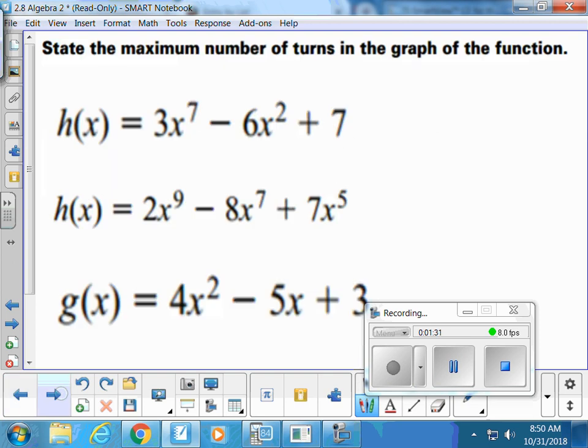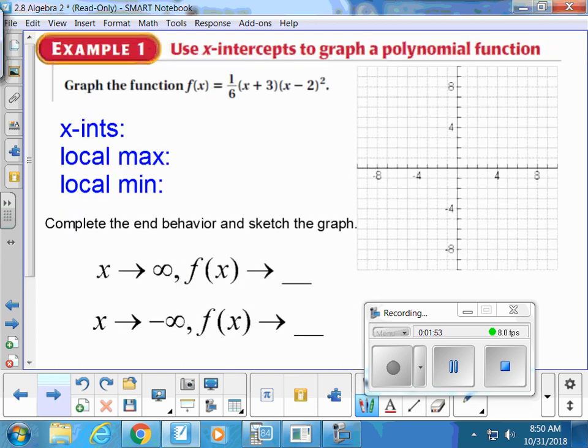This first one has degree 7, so it has at most 6 turning points. This graph has degree 9, so it has at most 8 turning points. This graph has degree 2, so it has at most one turning point. You just subtract 1 from the degree.